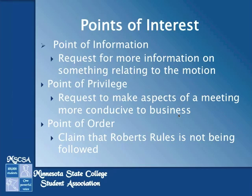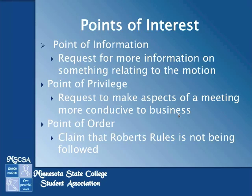Moving on to a point of privilege: this is a request that allows the meeting to be more conducive to business. Say if there's a lot of background chatter and it's hard to hear discussions — you could ask for a point of privilege and request that the noise be lowered or the side talk be ended. And lastly, a point of order allows you to claim that a part of Robert's Rules is not being followed. Say if someone made a motion, it was seconded, and the chair immediately asked for a vote — you could call a point of order noting that no discussion was allowed, and the chair would have to back up and allow for that discussion. None of these points need to be seconded or voted on.